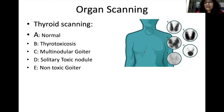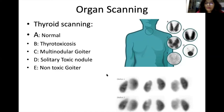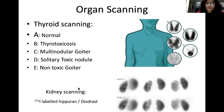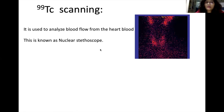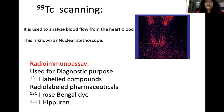Another example of organ scanning is for the kidney, where iodine-131-labeled Hippuran or Diodrast is used to produce different opacities depending on blood flow through the kidney, allowing identification of any defect in renal blood flow. One important fact about technetium-99 scanning is that it helps analyze blood flow from the heart, which is why it is known as the 'nuclear stethoscope,' similar to how a stethoscope is used to count heartbeats.